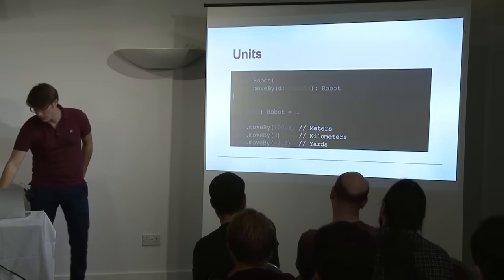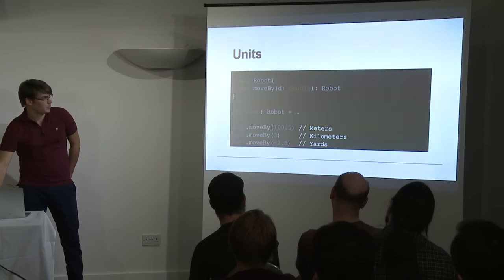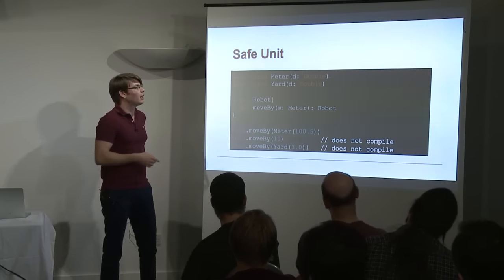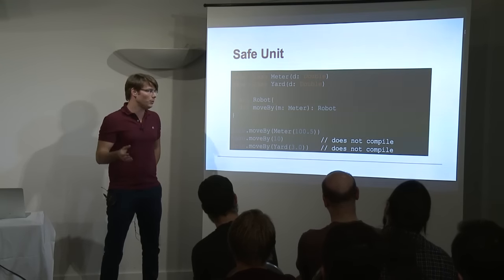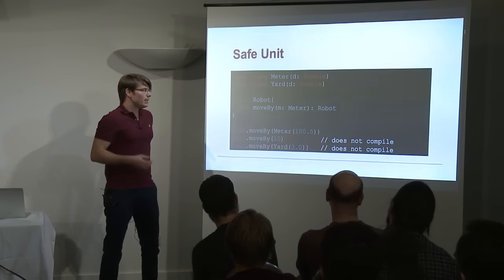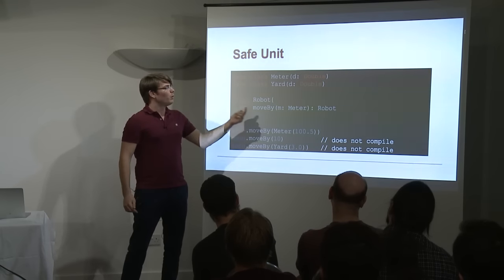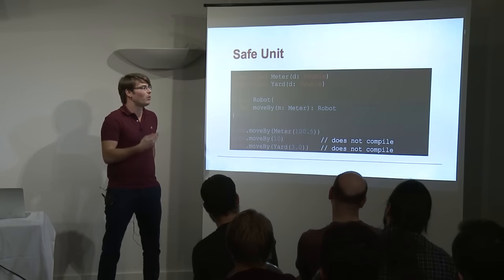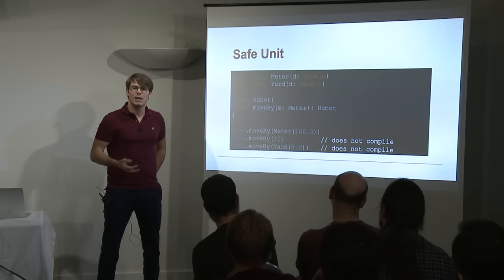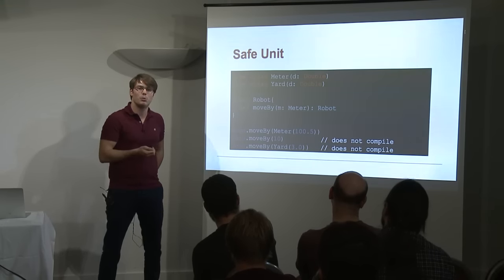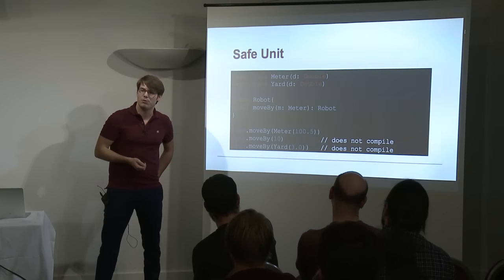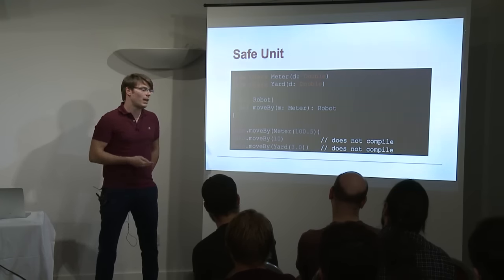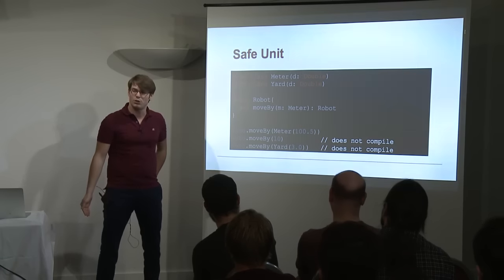We can do much better than this. What are the options? We could simply create case classes — one for meter, one for yard — that encapsulate a double. Then in our API we say that move_by requires meters. Potentially someone could put rubbish data inside of Meter, but you would have to consciously create a Meter out of a double, which reduces the risk of misinterpreting. It's documentation by itself: you just look at the type and you understand what it expects without looking at the documentation.